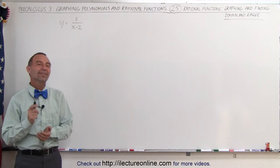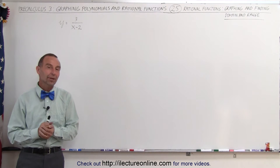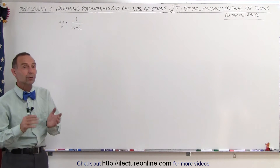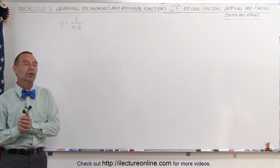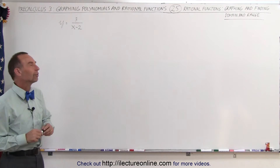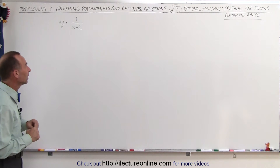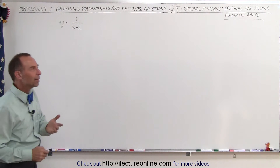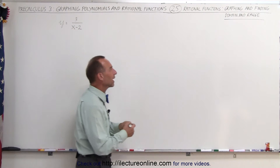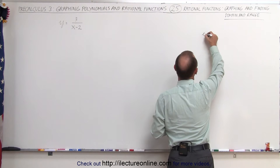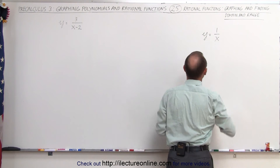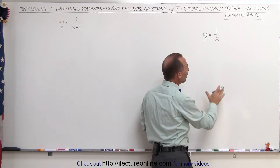Welcome to ElectronLine. In this next example, we have another rational function, and we're going to grab this rational function and find the domain and range. This particular one is of a special type — the type where we have y equals 1 over x, or a derivative of that, and we'll see in just a moment what we mean by that.